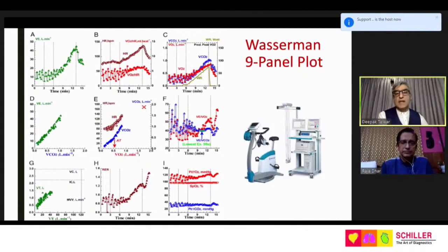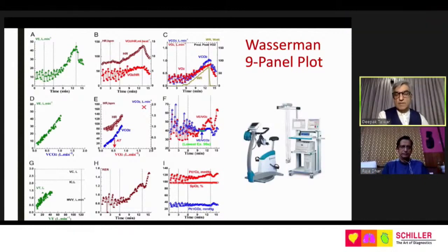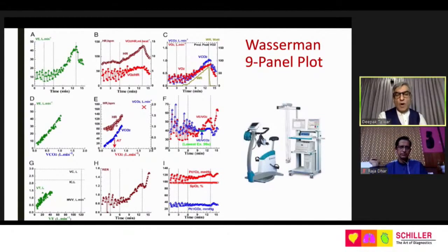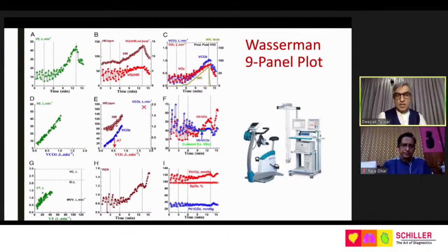These are called Wasserman graphs — standardized nine-panel displays significant for reporting and interpretation of CPET, because each panel conveys information about an individual component of exercise testing. The report comes in color with nine cramped panels on one page, so you need to look carefully. We will go panel by panel to understand what each one is telling us, then discuss how to analyze them in sequence — steps one through four — which are the four essential steps for reporting in order.